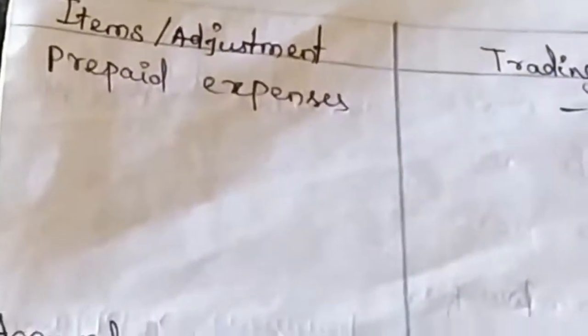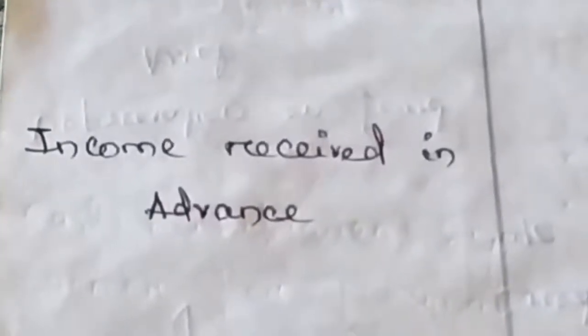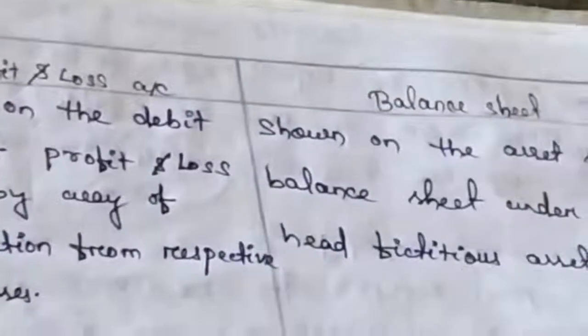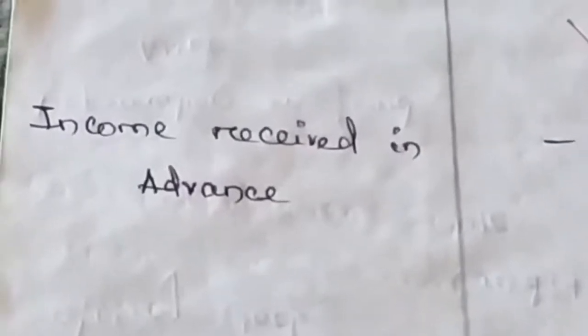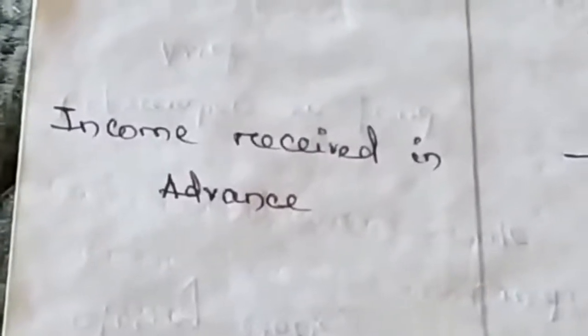Next adjustment is income received in advance. This is the opposite of prepaid expenses. For example, if you paid your insurance premium before the due date, for you it is a prepaid expense, and for the party who received it, it is income received in advance. Income received in advance is always indirect in nature — just like accrued income — since sales can never be received in advance.